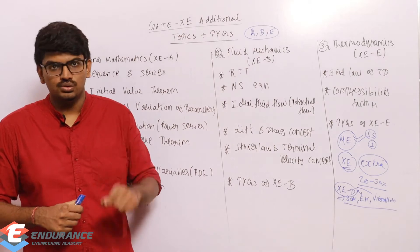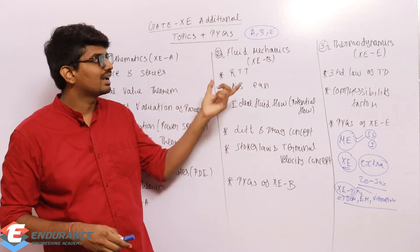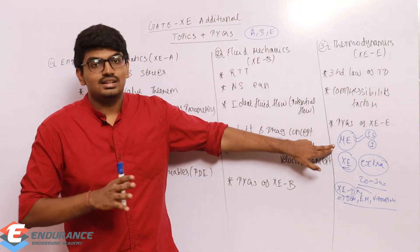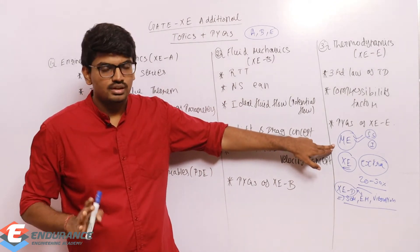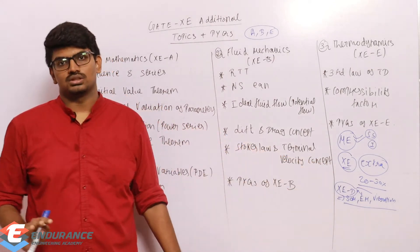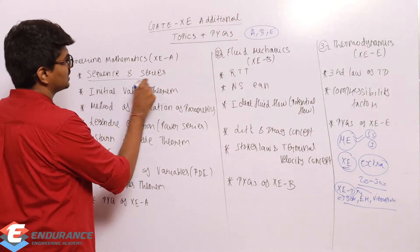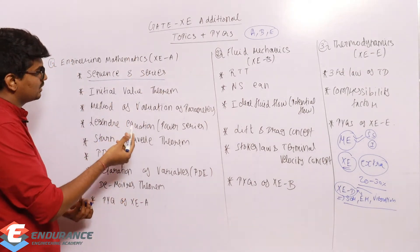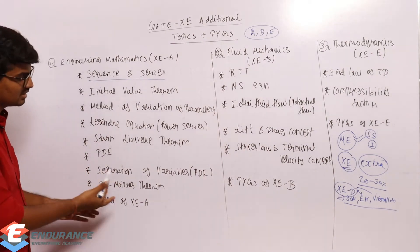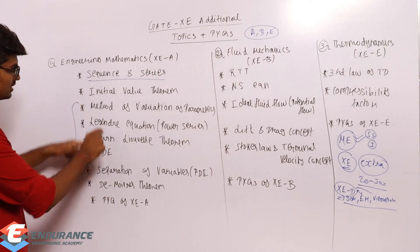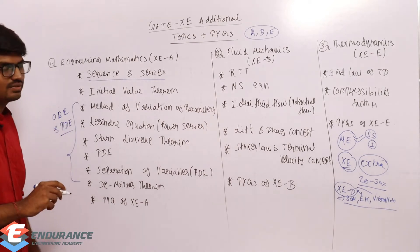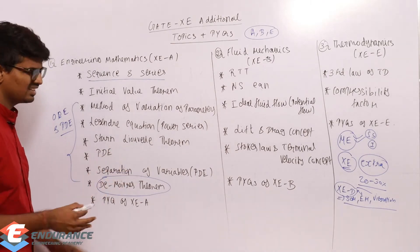This course is going to be useful for students who are choosing fluid mechanics and thermodynamics as their optional sections in XC, and who have already completed ME preparation. For engineering mathematics, we are covering additional topics such as sequence and series, initial value theorem, method of variation of parameters, Legendre equation, power series method, Green's level theorem, PDE separation of variables, and De Moivre's theorem.